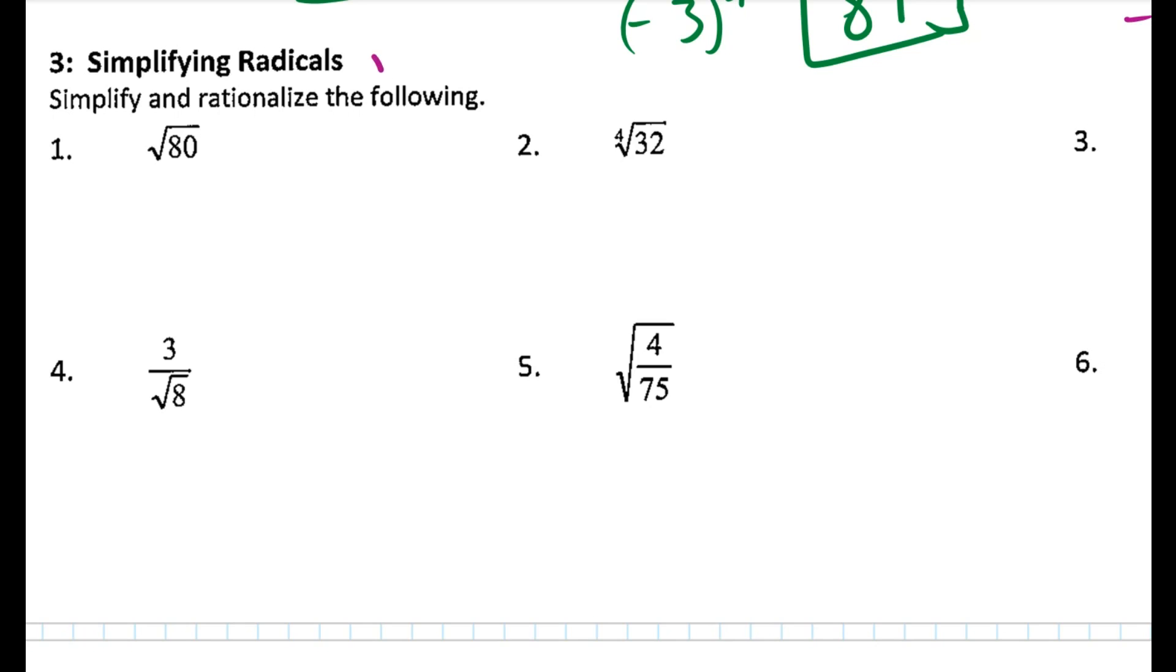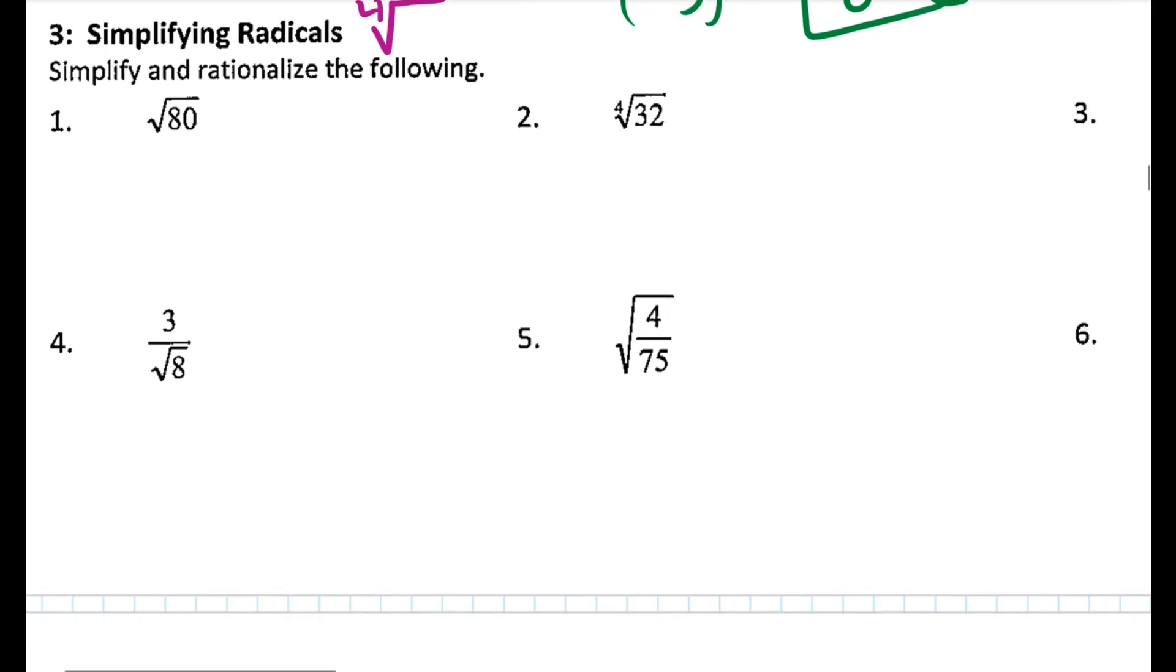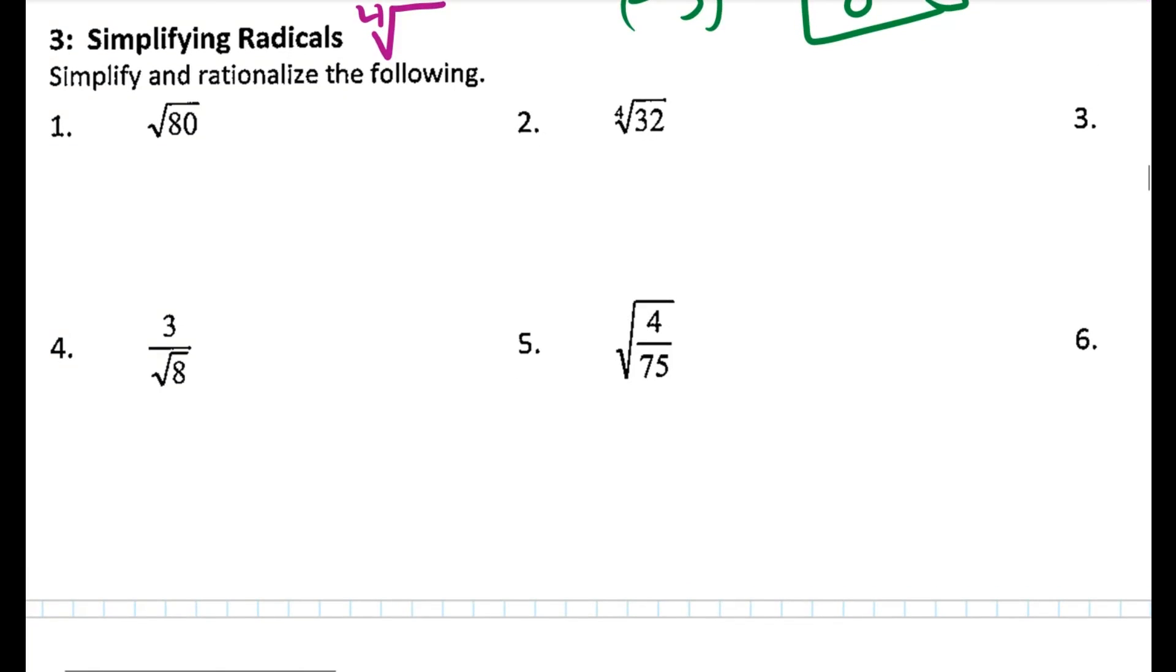Radicals just mean square roots, but also they could be fourth roots, like you see in number two. The idea is that we would like to take out anything that is a perfect square, like we're factoring out a greatest common factor. I'm going to use the fact that I can multiply two square roots together.